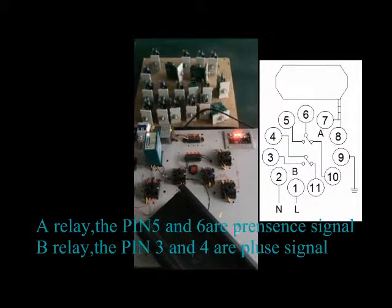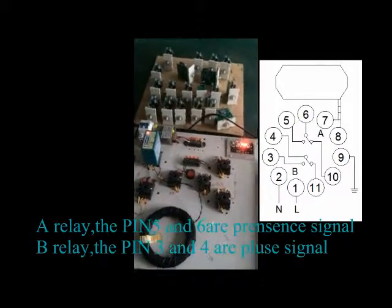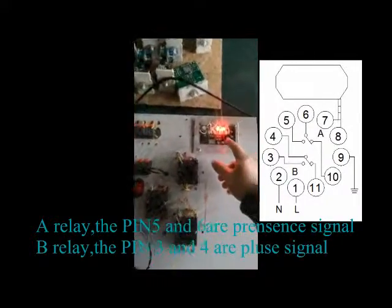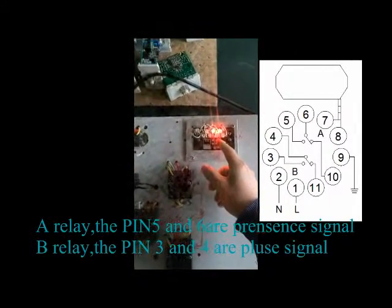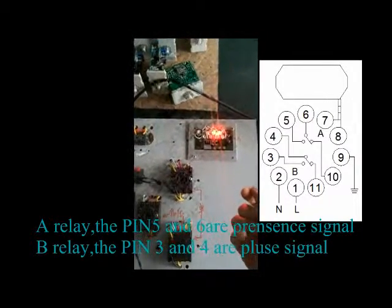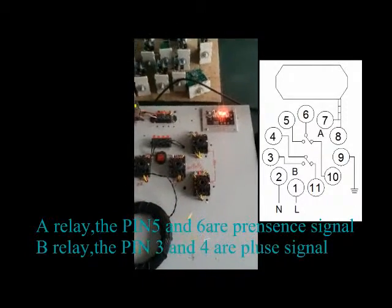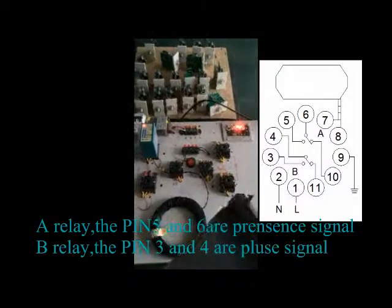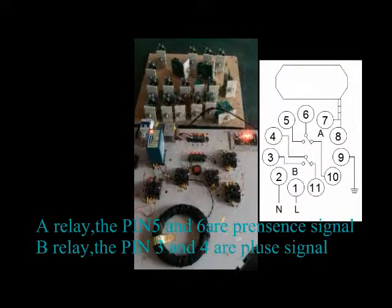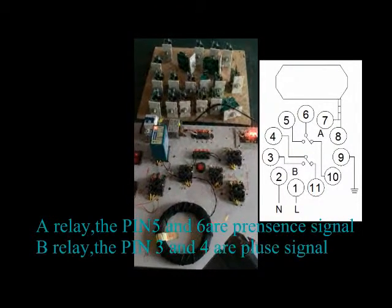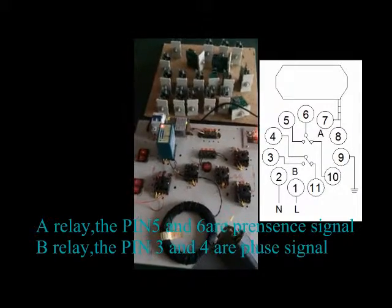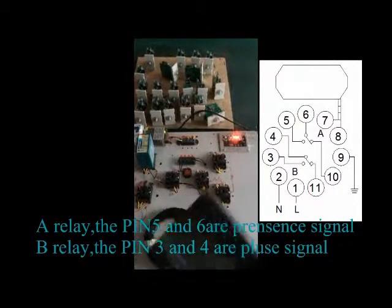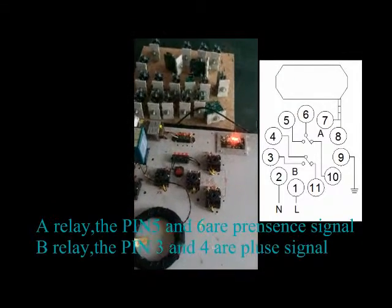The presence signal is for the traffic barrier control. It protects the barrier arm to hit the car. So we suggest the customer connect the presence signal to the barrier control. The pulse signal is just for counting the vehicle.